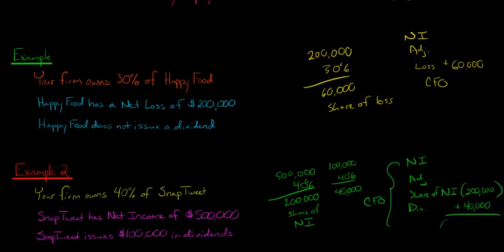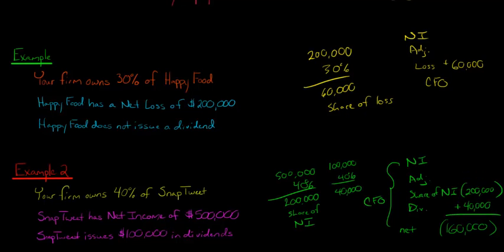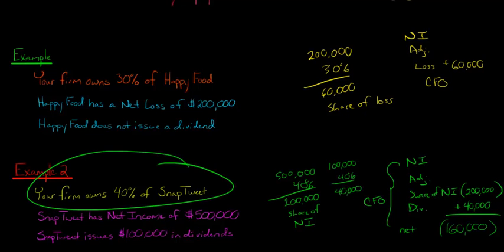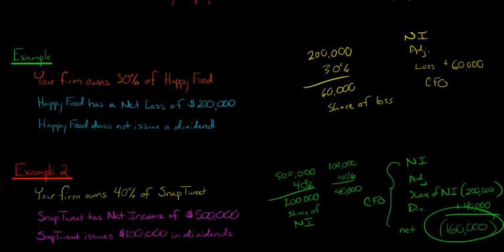You could also just do the net amount — in practice, most firms would show just the net amount, something like 'net effect from equity method investments.' In this case, we have a decrease of $200,000 and an increase of $40,000 in terms of adjustments to cash flow from operating activities. The net effect of this equity method investment is a decrease — an adjustment downward to cash flow from operations — of $160,000.